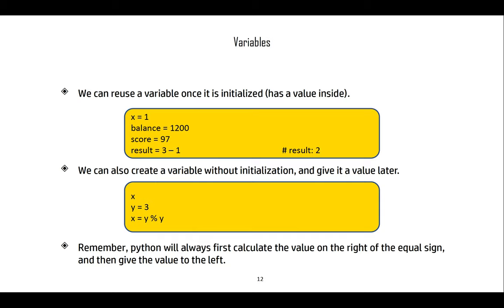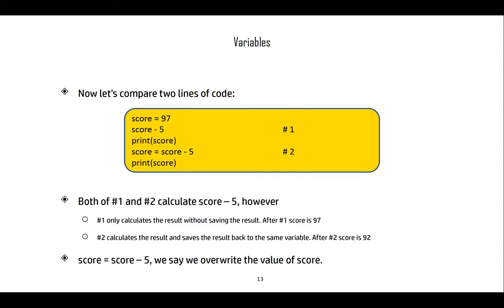We can reuse a variable once it has been initialized — once it has a value inside. We can also declare a variable for later storage. For example, declare x, then y = 3, then x = y mod y. Since we divide y by y there's no remainder, so x equals zero.